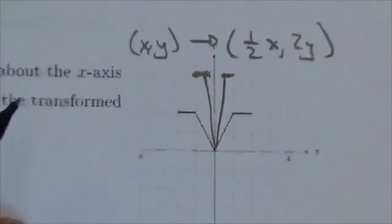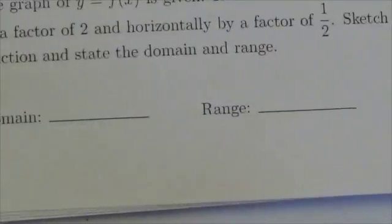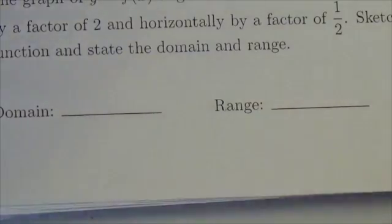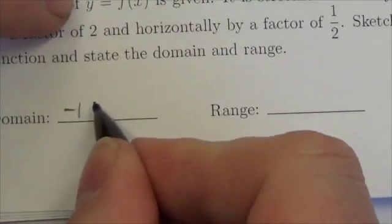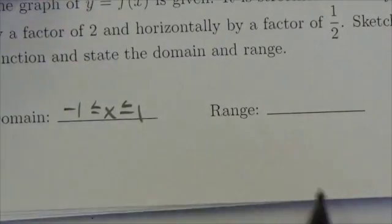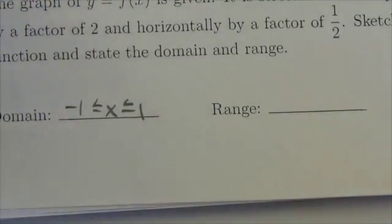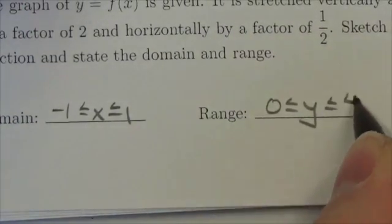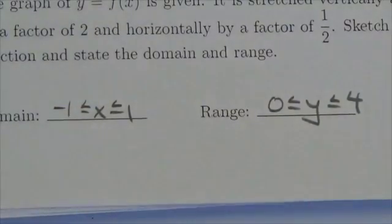Now, our domain and our range of that graph right there, in terms of domain, it used to go from negative 2 to 2. Now it's going to go from negative 1 out to 1, half of that. The range used to be 0 to 2. We're going to multiply those both by 2 here, but 0 times 2 is still 0. 2 times 2, however, is 4, so it goes 0 to 4. There you go.